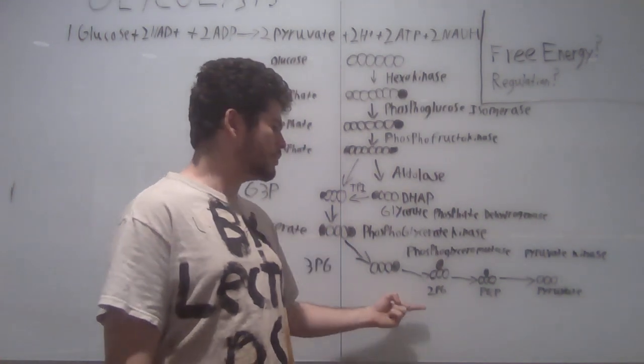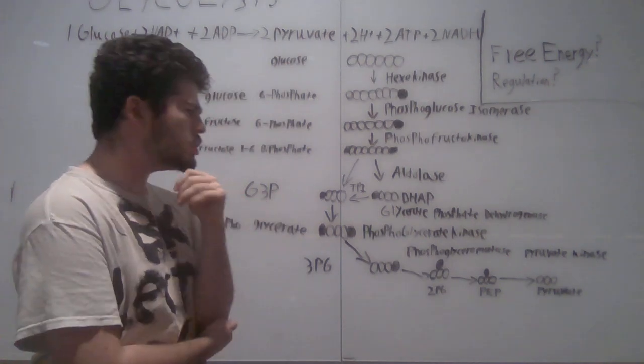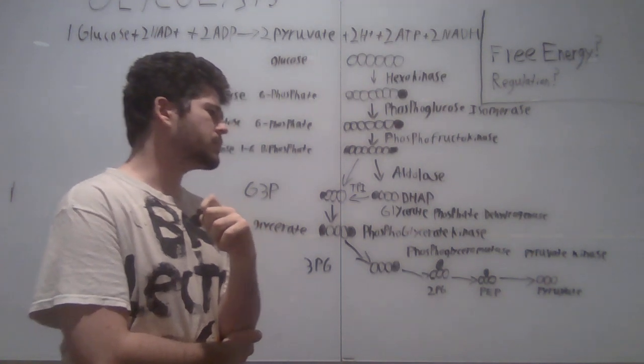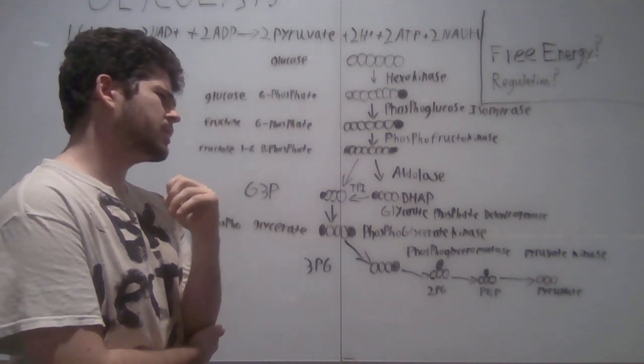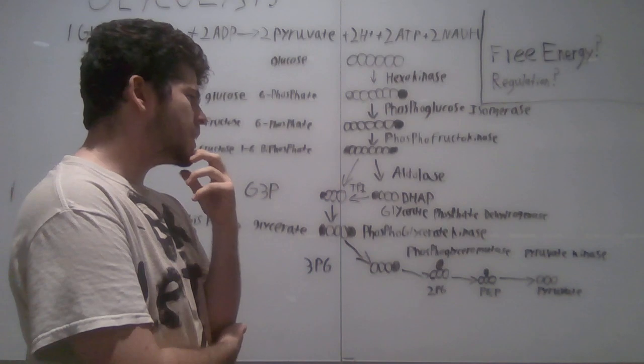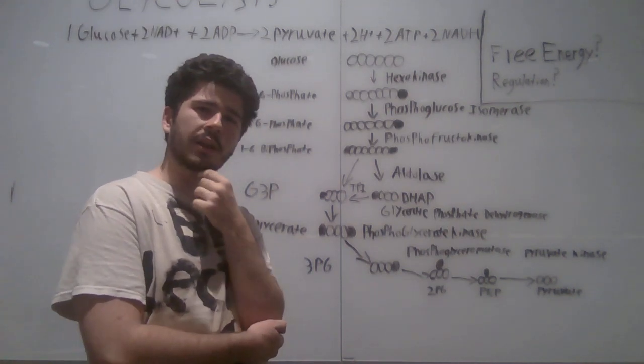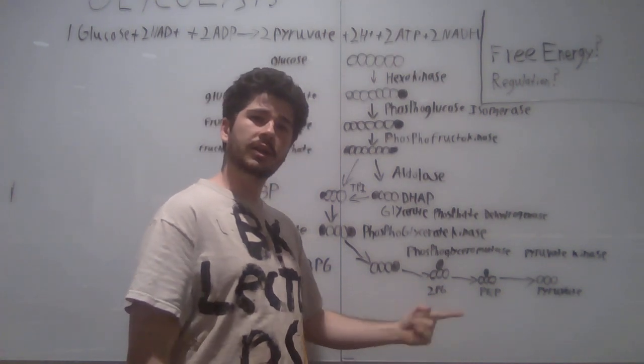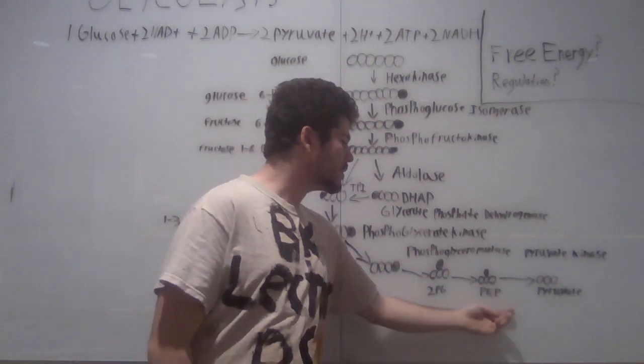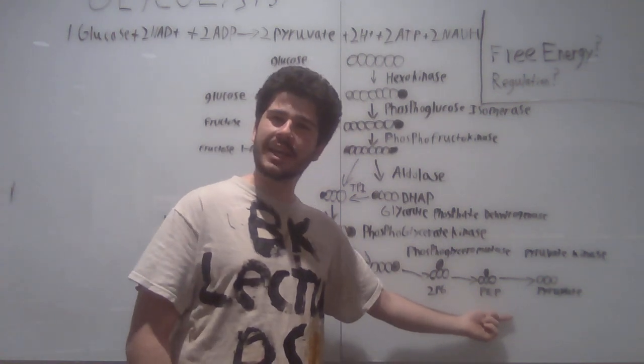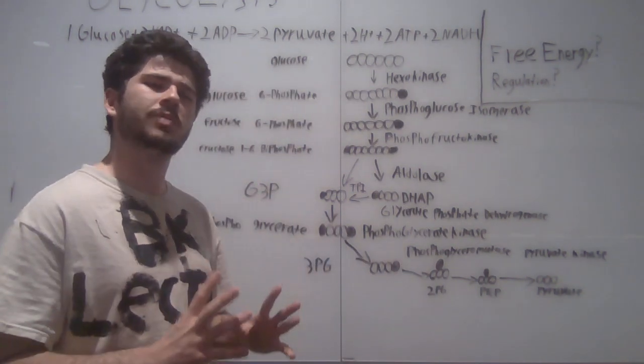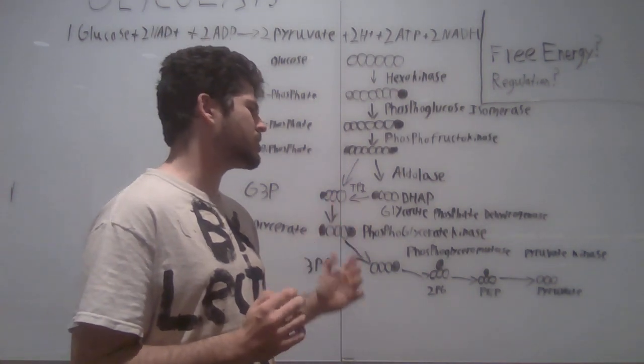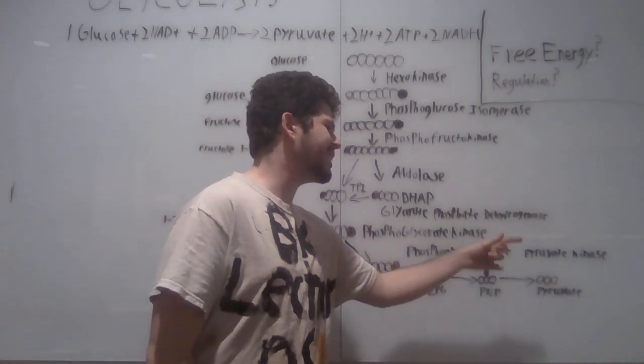2-PG, very close to pyruvate at this point, undergoes another reaction. It undergoes enolase. Enolase forms an enol bond within this molecule, leading the molecule to PEP. PEP, the penultimate substrate for this overall reaction, then undergoes one final reaction with pyruvate kinase.